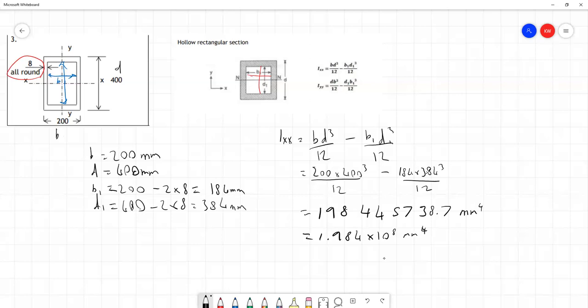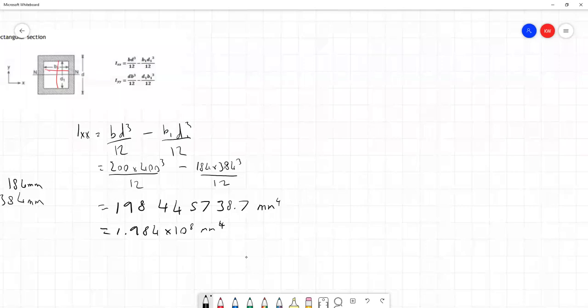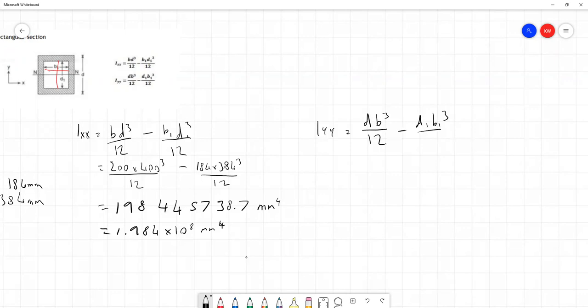So that's us got the second moment of area about x. There's something very similar to what we do for a rectangle—we just had to do a little bit more to take away that hollow rectangle in the center. And for Iyy, I'll write out the formula here that we get from page 28. This time instead of bd cubed, it's db cubed, and the same for d1 b1 cubed here. If we put in our numbers again, 400 times 200 cubed divided by 12 minus 384 times 184 cubed over 12.